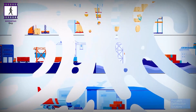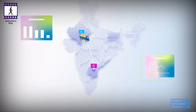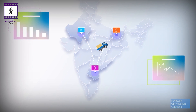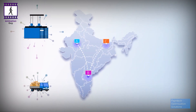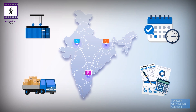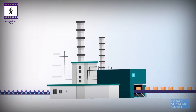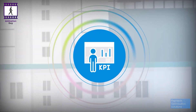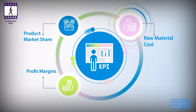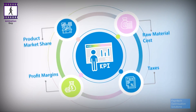In a complex supply chain that caters to multiple geographies with multiple products, it becomes essential to create a strategic manufacturing and supply chain plan which meets business KPIs like product market share, profit margins, raw material cost and taxes all at once.